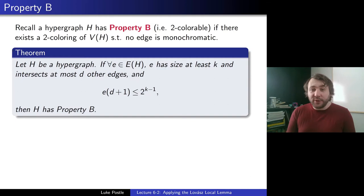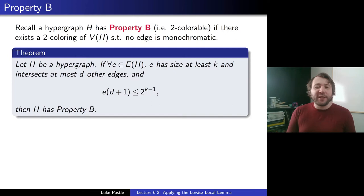So if you don't have too many edges — where now instead of just total number of edges we're looking more at their intersection versus their size — then we can conclude that H is two-colorable. We'll prove this with the Local Lemma. The inequality should remind you of the inequality from the symmetric version of the Local Lemma, and indeed that's how we'll do it.